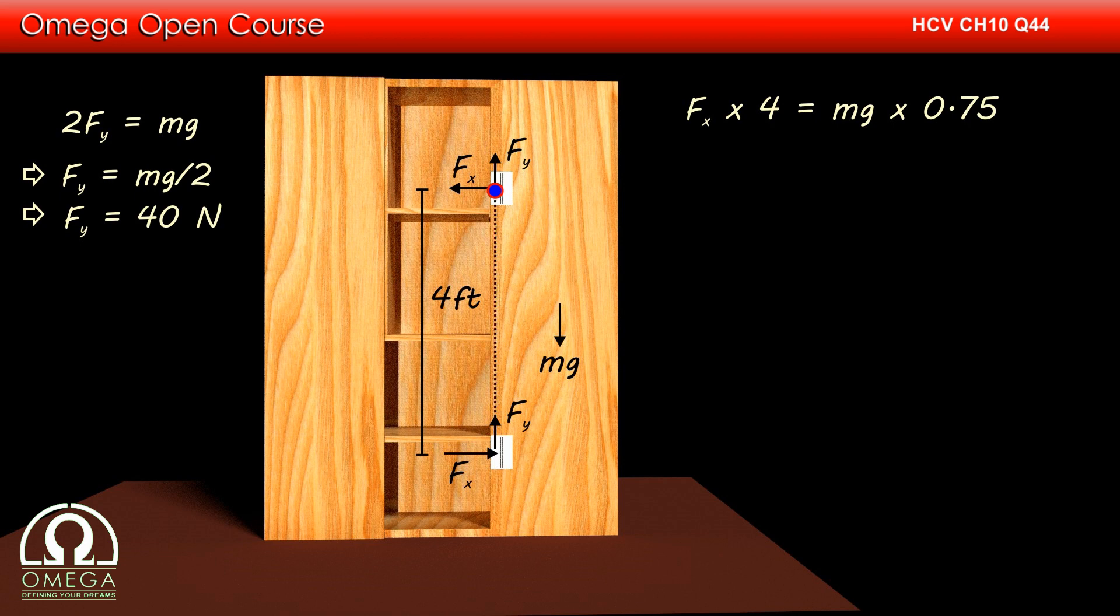The line of action of the vertical component of the force at the hinge is passing through the upper hinge. Therefore, the torque due to this force is zero. Finally, the line of action of gravitational force on the center of mass of the rod is at a perpendicular distance of 0.75 feet from the hinge.